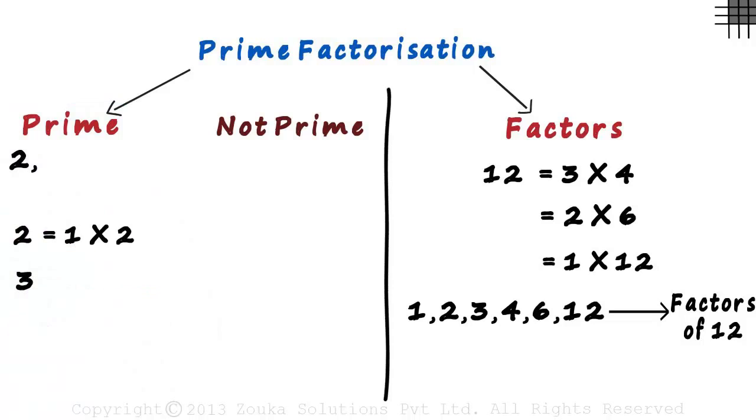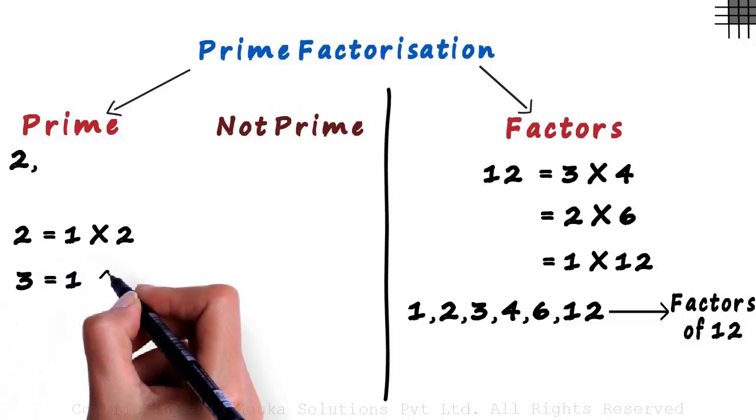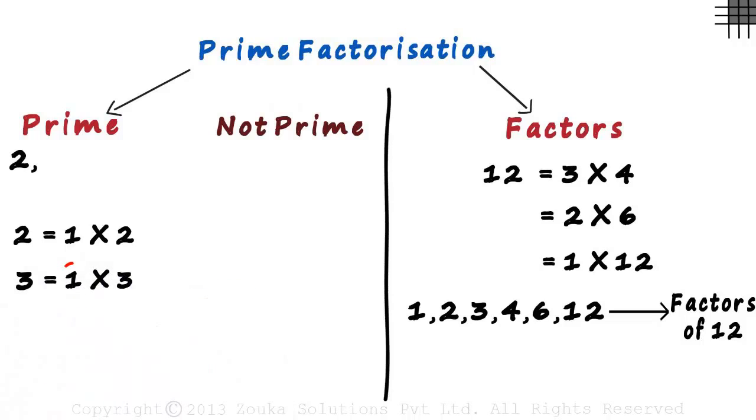What about the number 3? The only way in which it can be written is 1 multiplied by 3, the product of 1 and the number itself. 3 also is a prime number.